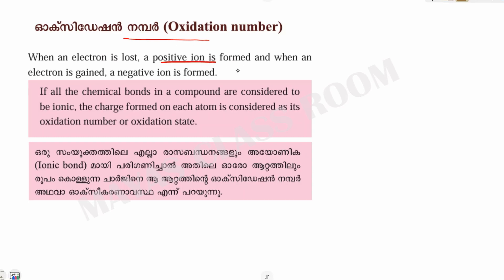If electrons are in the chamber, they are in the chamber — you will have the reduction. This is the field of reaction as an electron. Then the charge of this ion is positive and negative.